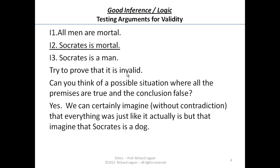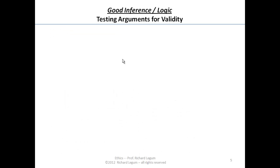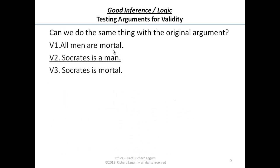Nonetheless, the conclusion — 'Socrates is a man' — is false. I described a situation in which all the premises are true and the conclusion is false, without contradicting myself. So the argument is invalid. Now contrast that with the first argument we discussed — the valid one, the V-argument.